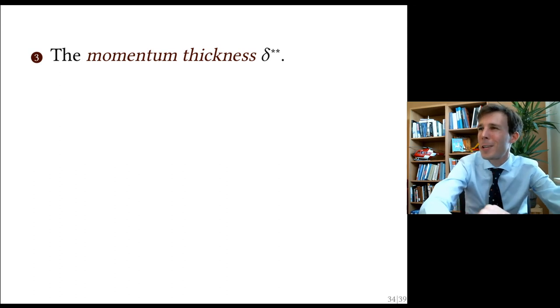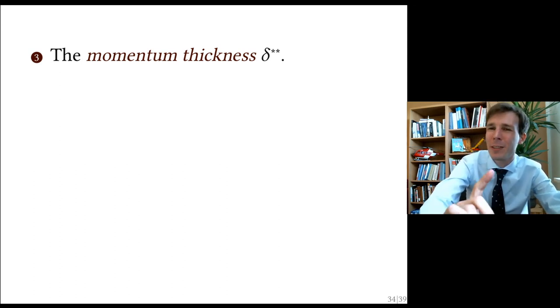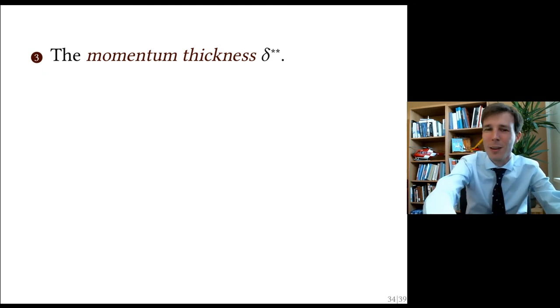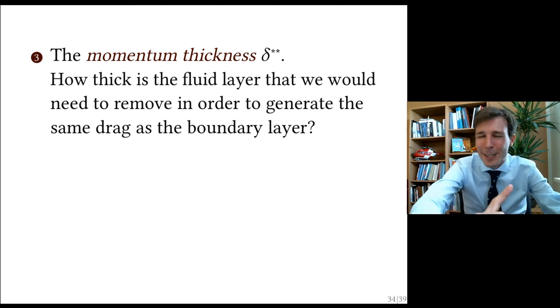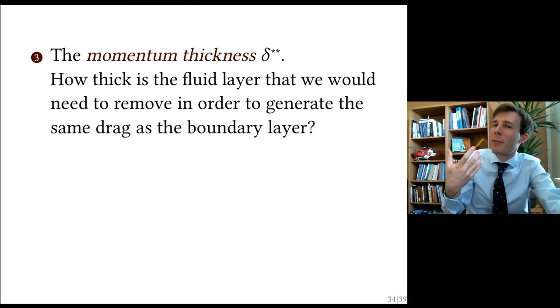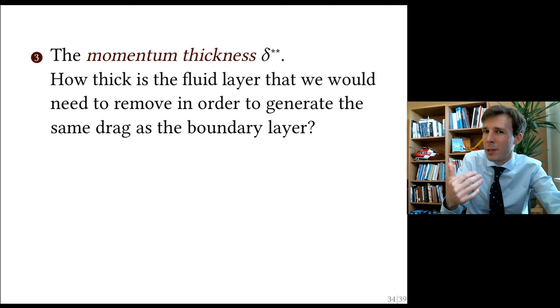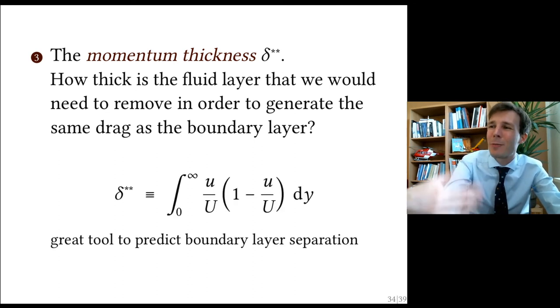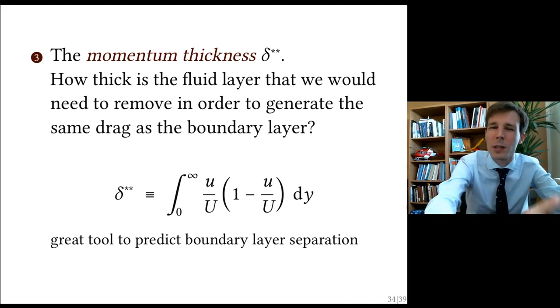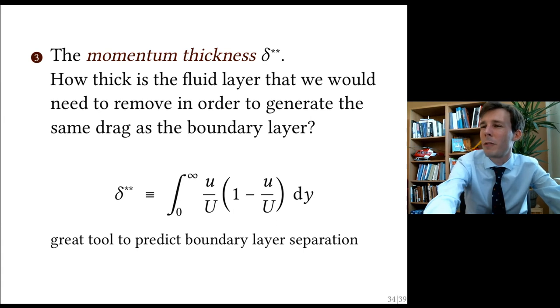The third thickness is the momentum thickness and it's written delta star star or it's also sometimes written theta but I prefer delta star star because then you get to say delta star star or delta double star all the time which is so cool. And this is the thickness of the fluid that you would need to remove away from the main flow so that you get the same amount of drag as the boundary layer is exerting. It's written with this equation here which again you can go back to the previous chapters and figure out because we've done this in an exercise in a solved exercise in previous chapters.